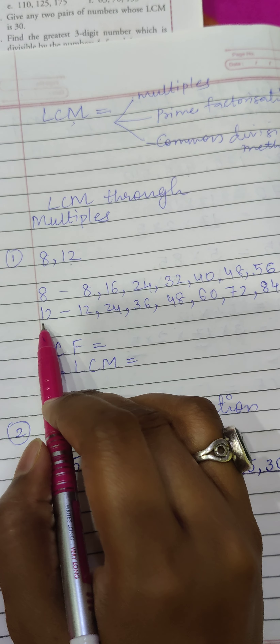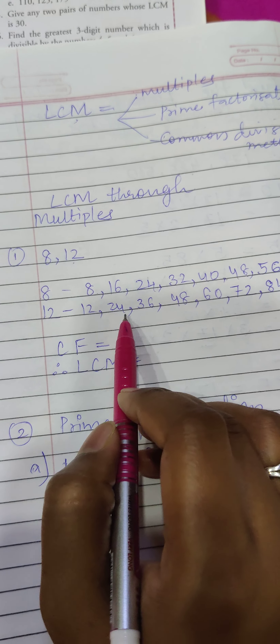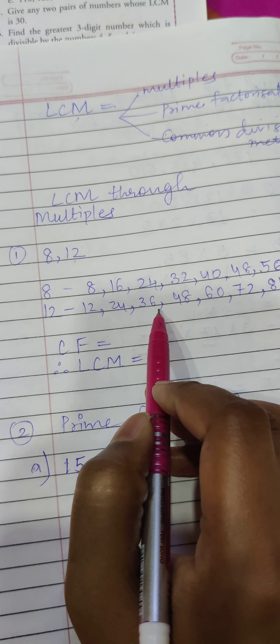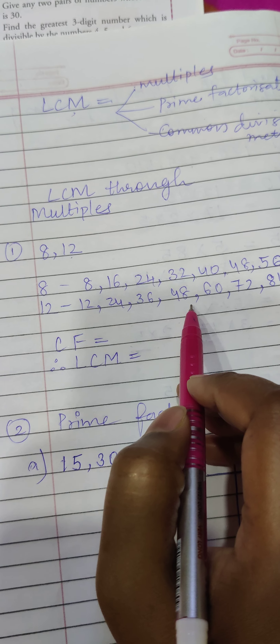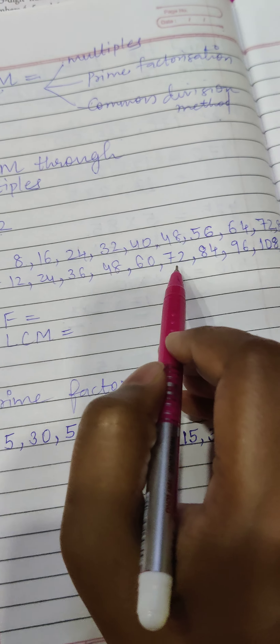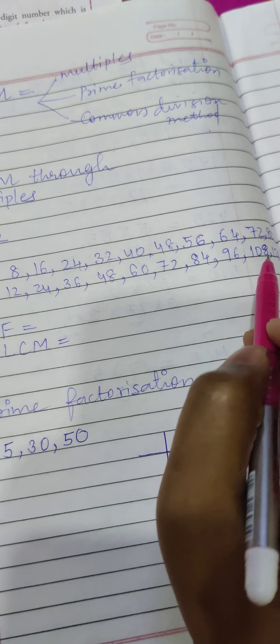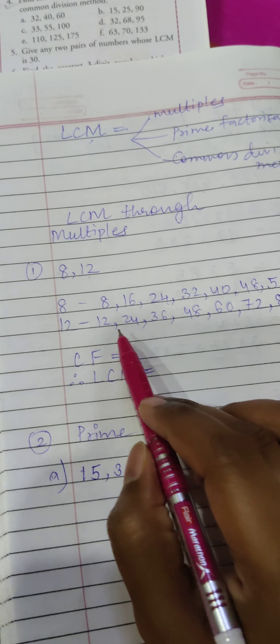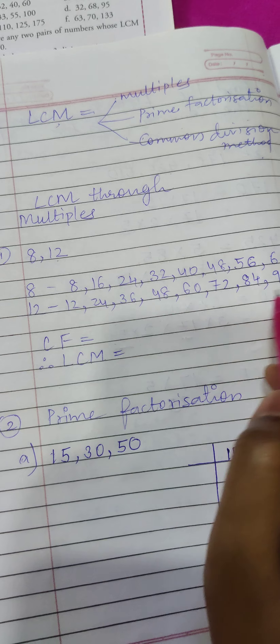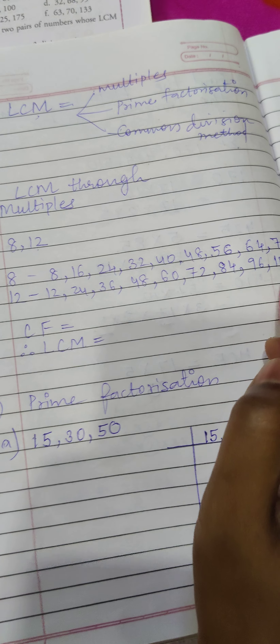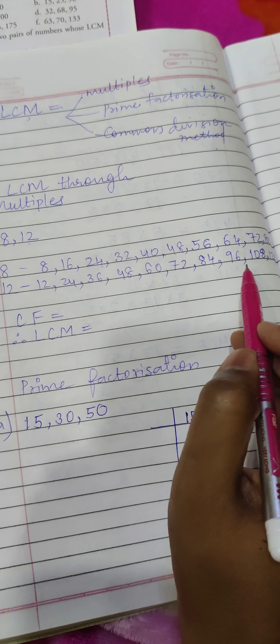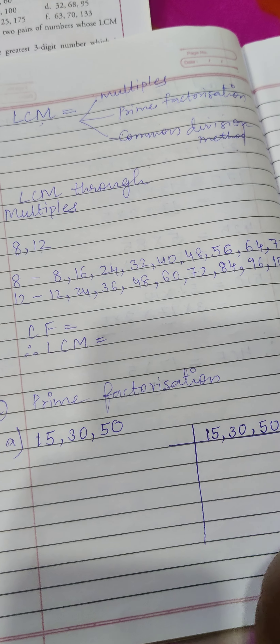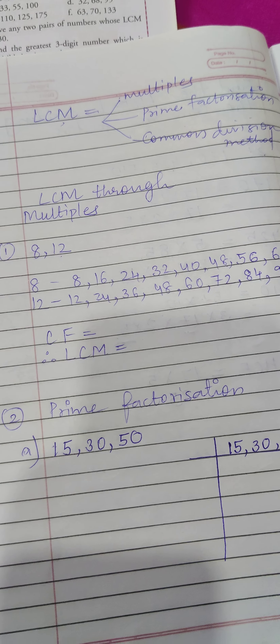Similarly, you are going to write the multiples of 12: 12, 24, 36, 48, 60, 72, 84. In this way we have written all the multiples of 12 from the tables.